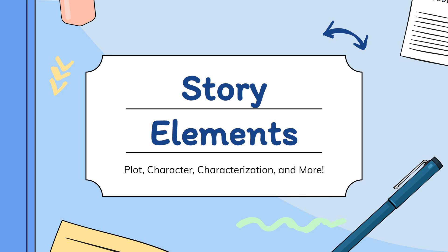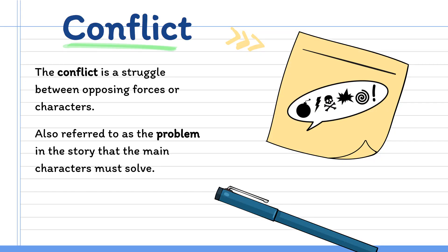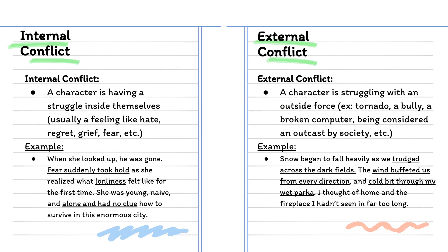In this lesson, we're going to focus on story elements, specifically in regards to conflict. A conflict is a struggle between two opposing forces or characters. It is also referred to as the problem that the story has that the main characters need to solve. There are two main types of conflict: internal and external.